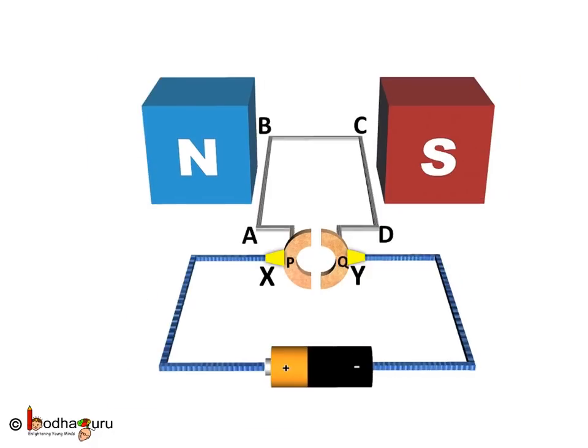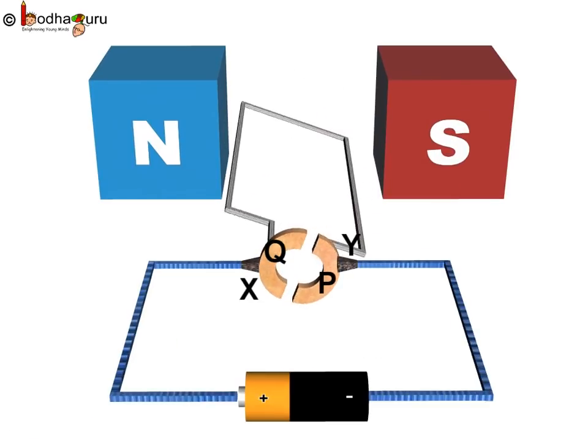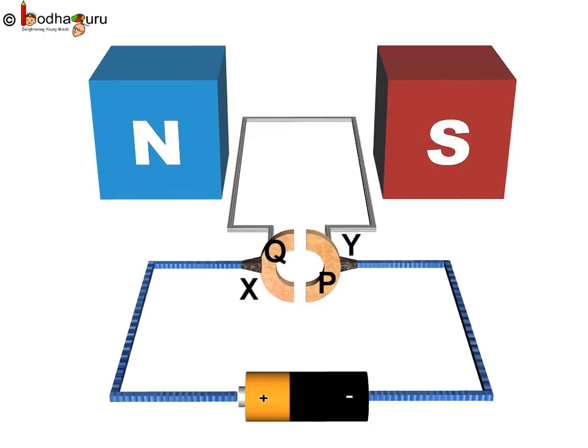If you remember, for the prior half rotation, the half ring P was in contact with the brush X and the other half Q was in contact with the brush Y. And this gets changed after half rotation. And what is the impact of this? Well, now the current in the coil gets reversed and flows along the path DCBA. That is, now for the remaining half rotation, the current enters the coil from arm CD and in the arm CD, it flows from D to C. Then it goes to arm AB where the current flows from B to A.